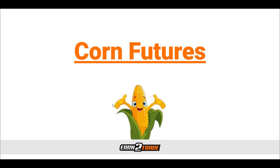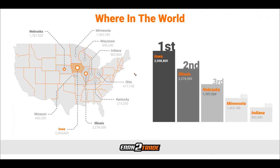Corn futures are one of those things that not a whole lot of traders gravitate towards in the masses like the E-mini S&P 500. The grain markets are always a little bit left untouched, but that does not mean there isn't value in being aware of what is there. With over 14 billion bushels of corn produced in the United States every year, the US is the largest producer and exporter of corn in the world, exporting approximately 20% of the world's corn supply and contributing to over 40% of the world's corn production.